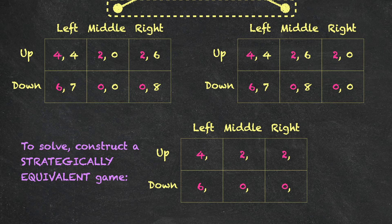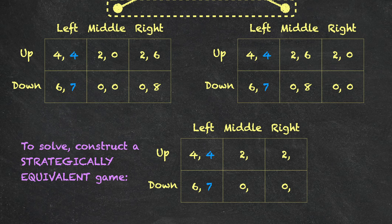Now let's look at Bob's payoffs. If Bob chooses left and Anne chooses up, he gets four in both states of the world. If Bob chooses left and Anne chooses down, he gets seven in both states. So whenever Bob chooses left, his payoffs do not depend on the state of the world at all — they depend on Anne's action, but not on what nature has chosen. Bob's payoffs when he chooses left are four if Anne chooses up and seven if Anne chooses down.